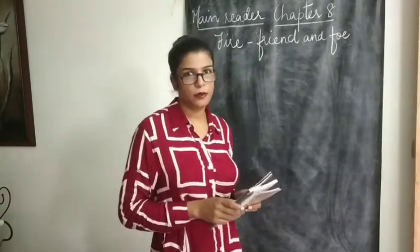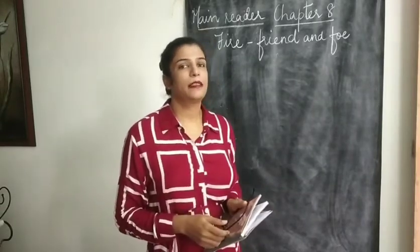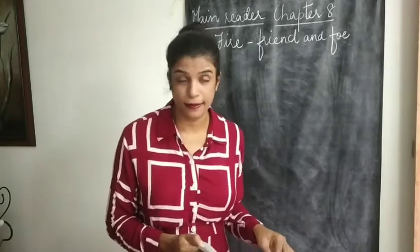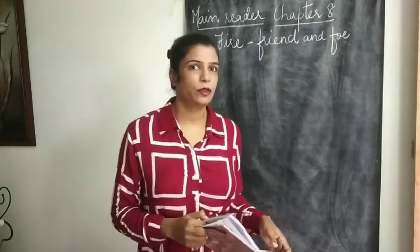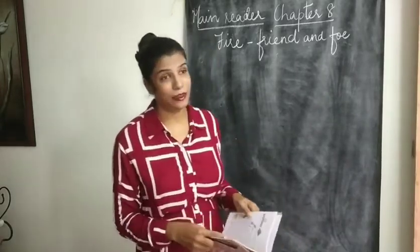Good morning children. We begin with the portion of periodic 2. A few chapters at the beginning of the session had been cancelled. Periodic 2's portion of the main reader includes unit 7 and unit 8. Unit 7 includes the invention of Wittevonk and dad and the cat and the tree, both have been cancelled. So I start off with you with unit number 8, the prose part of it — Fire Friend and Foe.